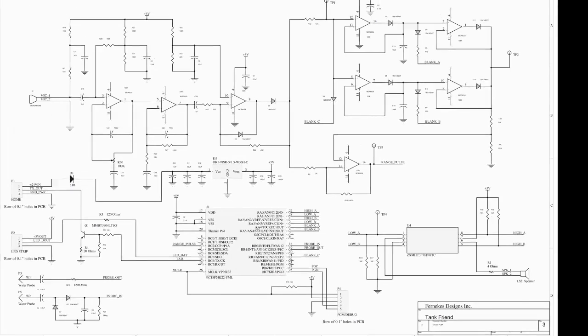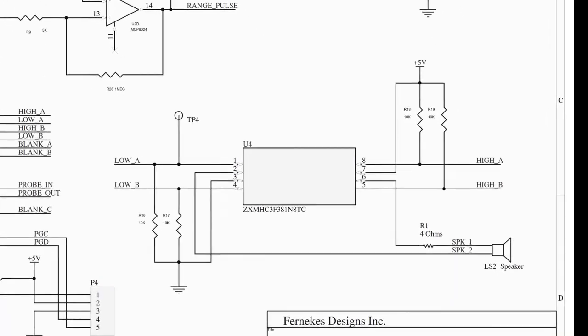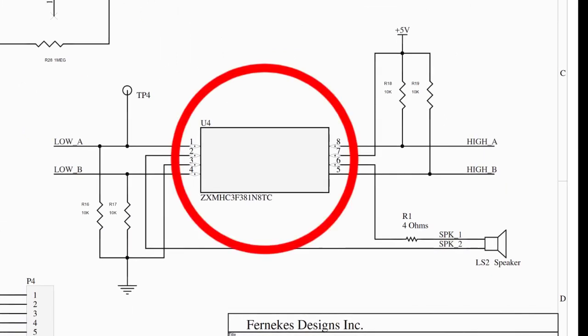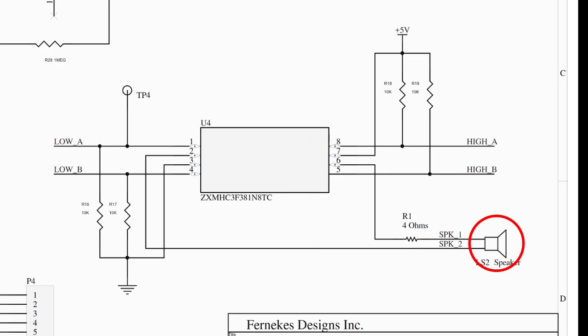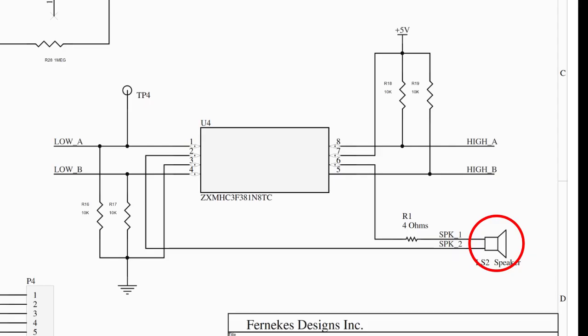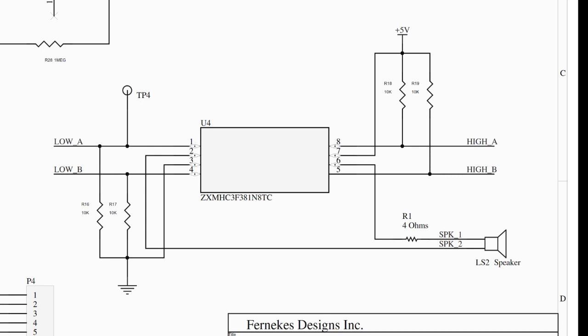Let's start with U4 which is the pinger amplifier. This is really just an H-bridge which produces a bipolar pulse to feed the speaker. This is what actually makes the click that propagates down the tube. The 4 ohm resistor is there to limit the current to a reasonable level.